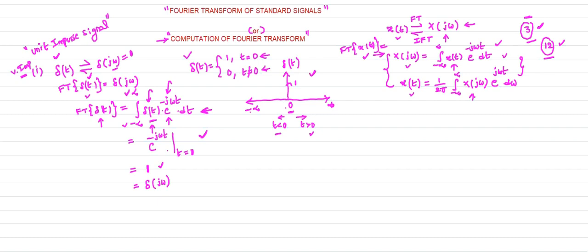The topic of this class is the computation of the Fourier transform — finding the Fourier transform of standard signals. The first signal considered is the unit impulse signal delta(t), defined only at t = 0 and zero elsewhere. To find its Fourier transform, we apply the Fourier transform formula and observe the integration.